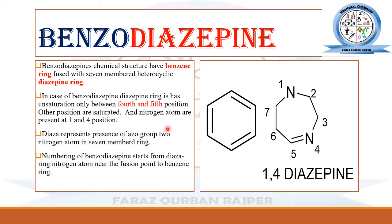The 'di' part in benzodiazepine represents the presence of two nitrogen atoms in the diazepine ring. The numbering of the benzodiazepine ring starts from the nitrogen nearer to the benzene ring. Both rings are fused together: numbering starts at position 1, then 2, 3, 4, and 5. At the fifth position, there is a phenyl group — an important structural feature of all benzodiazepines.